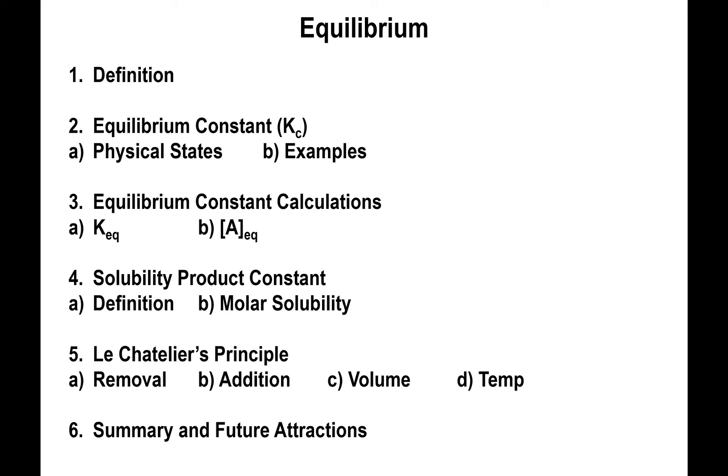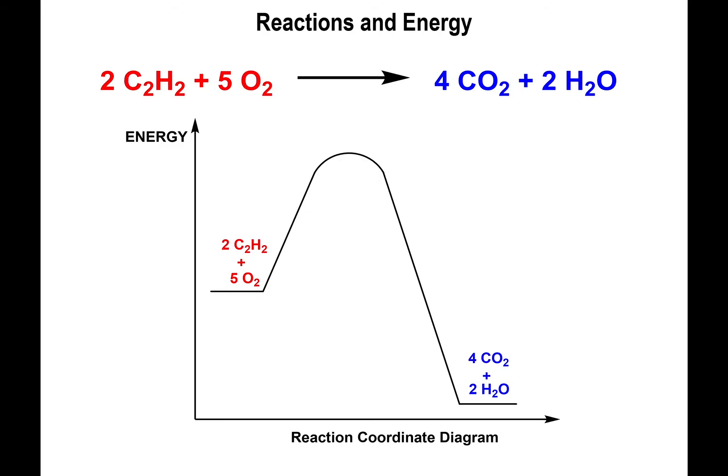Finally, let's talk about equilibrium. When you look at a reaction and think about the energy associated with the reactants and products, you typically end up looking at a diagram like the one shown here. This is called a reaction coordinate diagram.